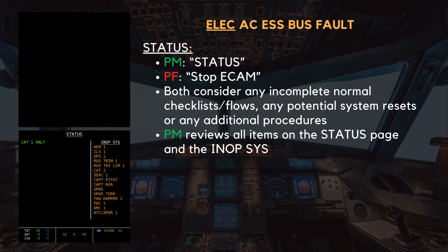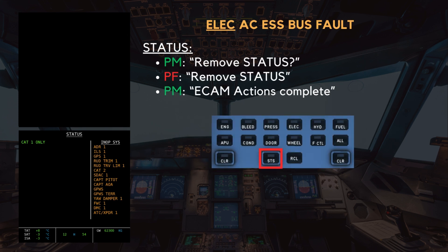The inoperative systems are: ADR 1, ILS 1, GPS 1, Rudder Trim 1, Rudder Travel Limiter 1, CAT 2, S-DAC 1, the Captain's Pitot and Angle of Attack probes, GPWS, GPWS Terrain Function, Yaw Damper 1, Flight Warning Computer 1, DMC 1, and ATC Transponder 1. Remove status. eCAM actions complete.